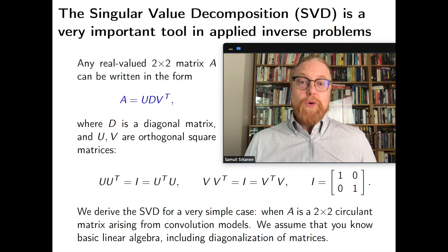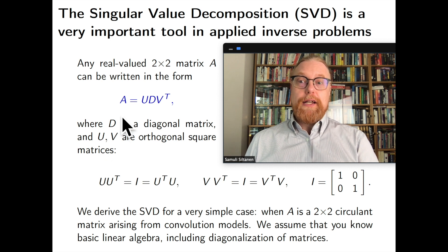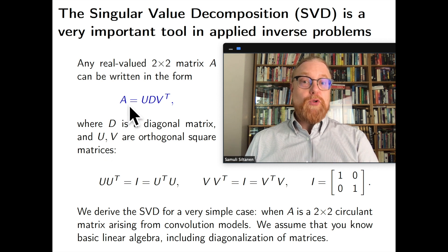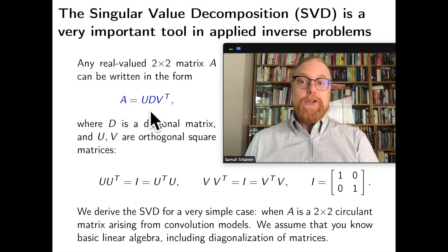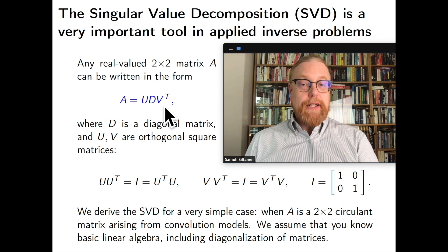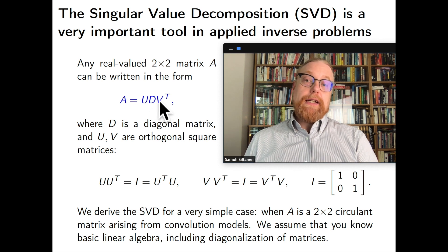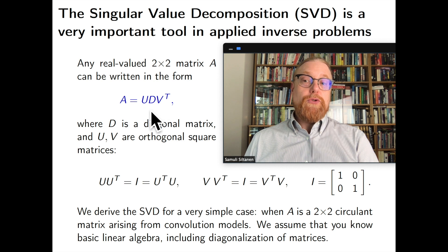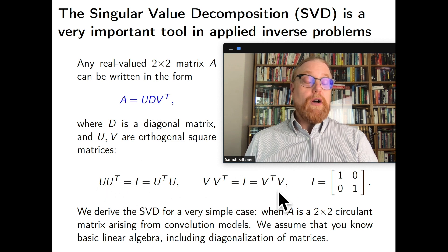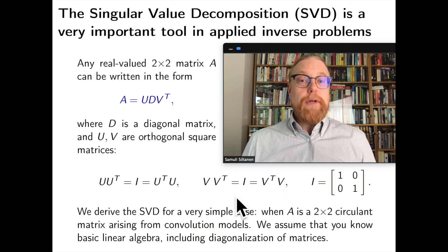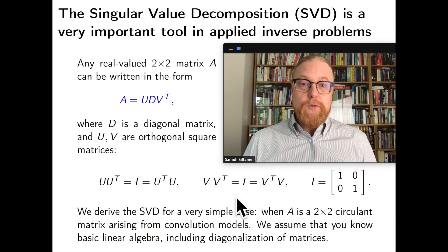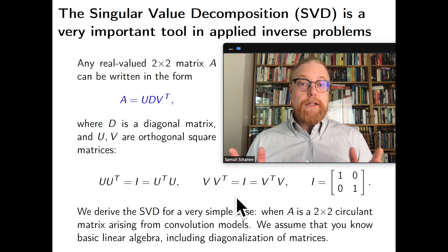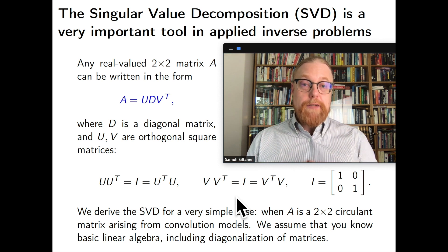So the SVD for a matrix A looks like this. A equals the product of three matrices U, D and V transpose, where D is diagonal and U and V are these very rigid orthogonal coordinate transformations. SVD can be calculated for any matrix whatsoever regardless of size and also for real and complex matrices.